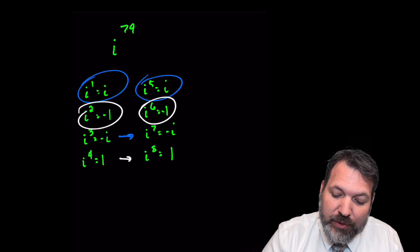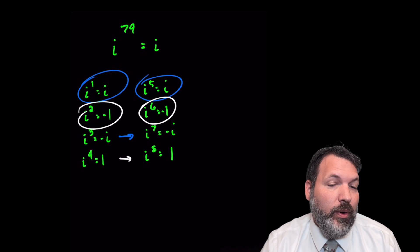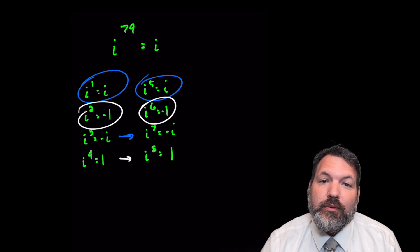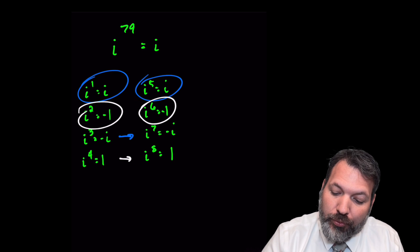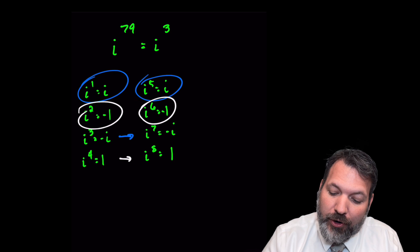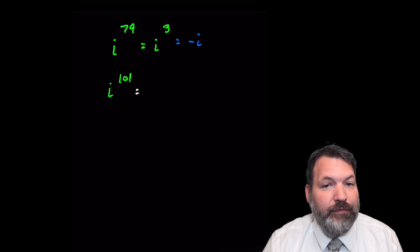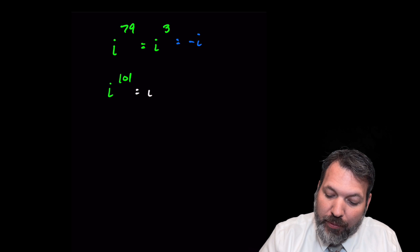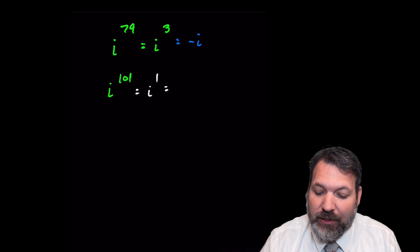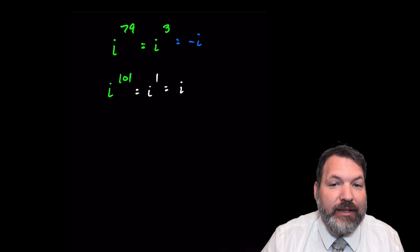For i to the 79th specifically, I just need to figure out that 79 divided by 4 leaves a remainder of 3. So this is the same thing as i to the third, which is negative i. For i to the 101st, dividing 101 by 4 leaves a remainder of 1, so this must be the same thing as i to the first — that is, i itself.